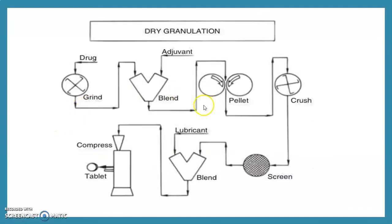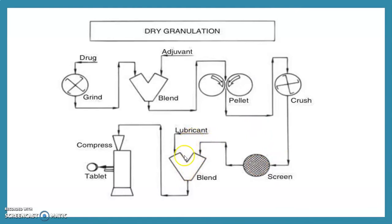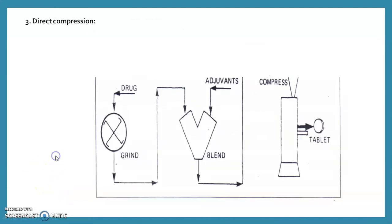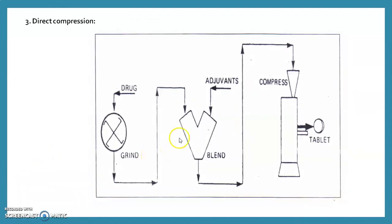In dry granulation: drug is blended with adjuvants, but rather than adding liquid, the dry blend is compacted through rollers, then crushed, screened for even size, blended with lubricant, and finally compressed. In direct compression: drug is ground, blended with adjuvants, and directly compressed in a tablet compression machine.